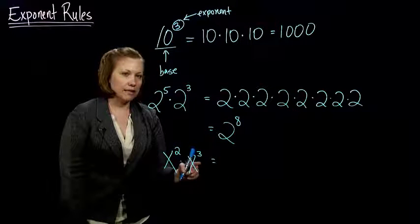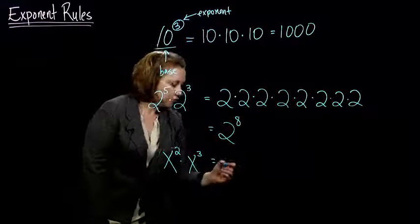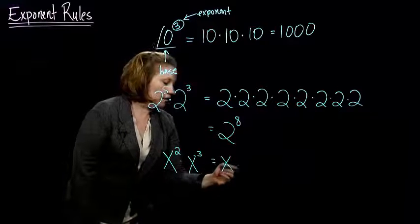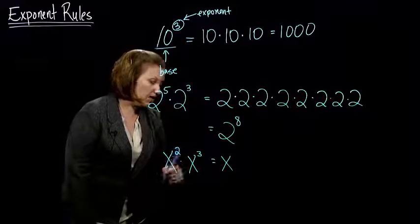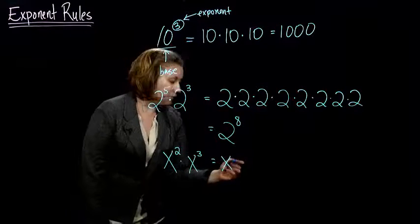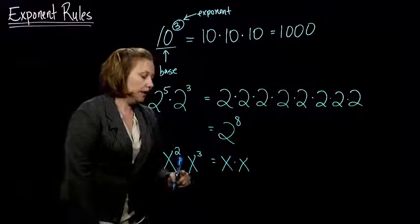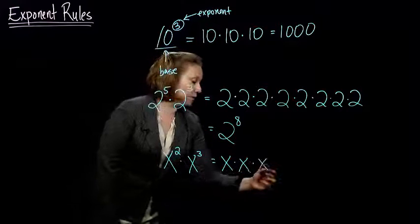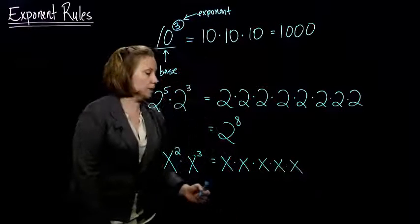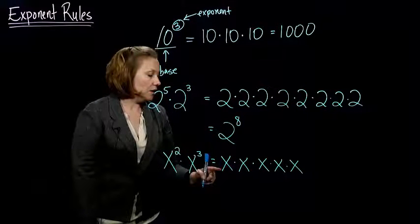So, I have x squared times x to the 3rd. Well, x squared, so any number, this x is just some number. Some number to the 2nd power tells me to take that number and multiply it by itself.